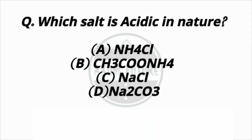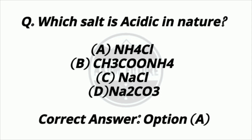Question 9. Which salt is acidic in nature? Option A: NH4Cl. Option B: CH3COONH4. Option C: NH4Cl. Option D: NH2CO3. Answer: Option A — NH4Cl.